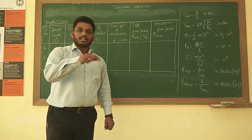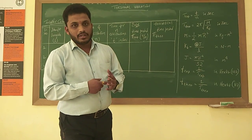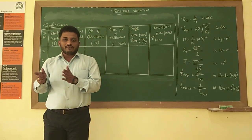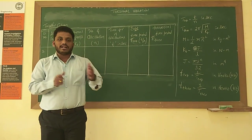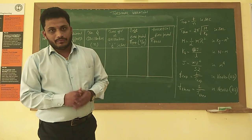Here, a rotor disc — a circular disc — is connected to a shaft. We will be varying the shaft length and finding the natural frequency of that shaft.